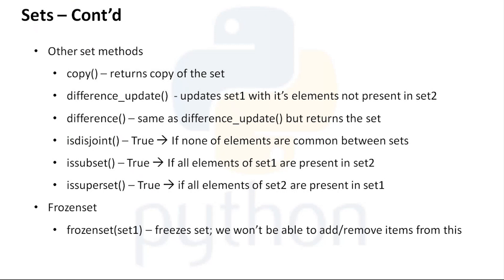isdisjoint() checks if both sets are completely different with no common elements. issubset() returns True when all elements of set one are present in set two — set one is subset of set two. issuperset() works in reverse — all elements of set two must be present in set one for set one to be a superset of set two.